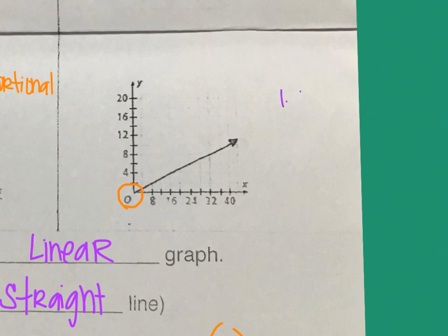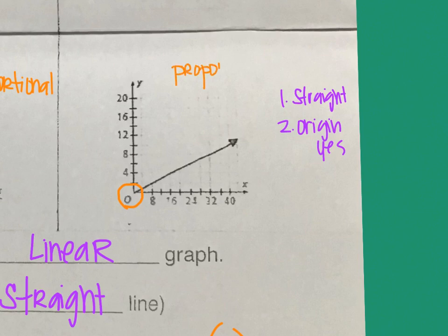Let's scoot over to the second graph. Number one, it is straight. So that's good. Number two, does it touch the origin? Yes, it does touch the origin. I actually circled it right there. And so this one, we would say, yes, this is proportional. So graphs, mega easy. All you have to do is use your eyes and look for these two things. Is it straight and touch the origin?